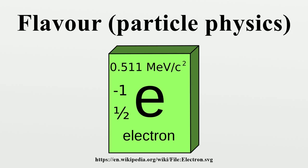In particular, flavor states may undergo quantum superposition. In atomic physics, the principal quantum number of an electron specifies the electron shell in which it resides, which determines the energy level of the whole atom. In an analogous way, the five flavor quantum numbers of a quark specify which of six flavors it has, and when these quarks are combined this results in different types of baryons and mesons with different masses, electric charges, and decay modes.